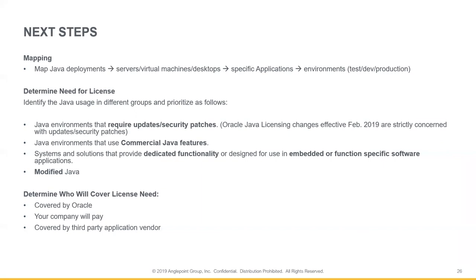For example: Java SE 8 on server one running homegrown application one in a production environment. This should be done whether you have Flexera, Snow, or just an Excel table. It's always best to map. There should be some process in place to monitor changes, and you should update this mapping as your environment changes, grows, and migrates from data center to data center.